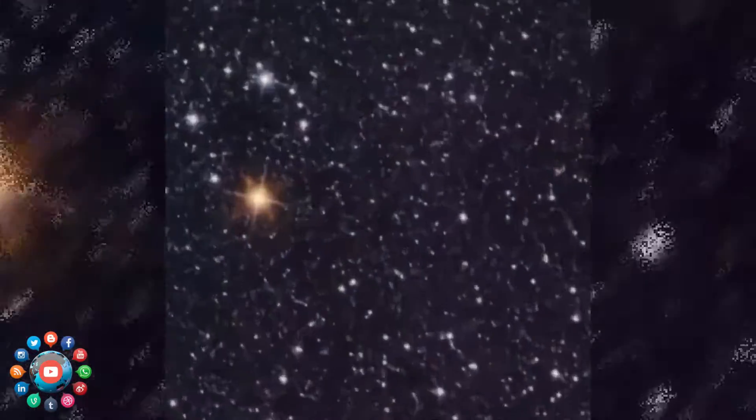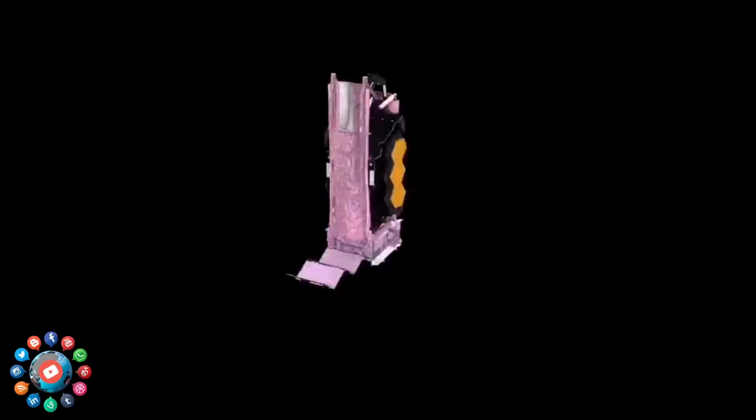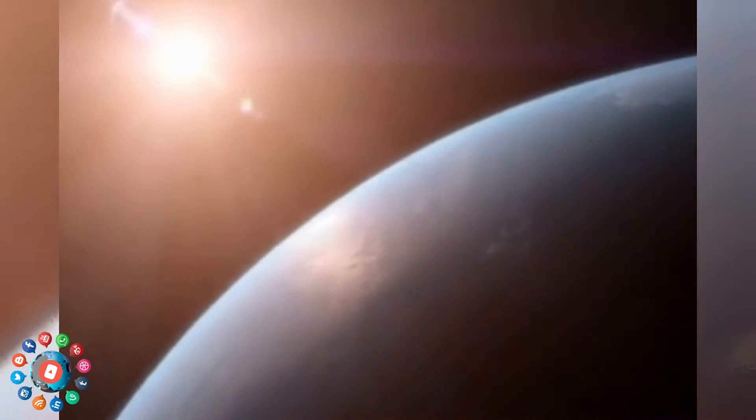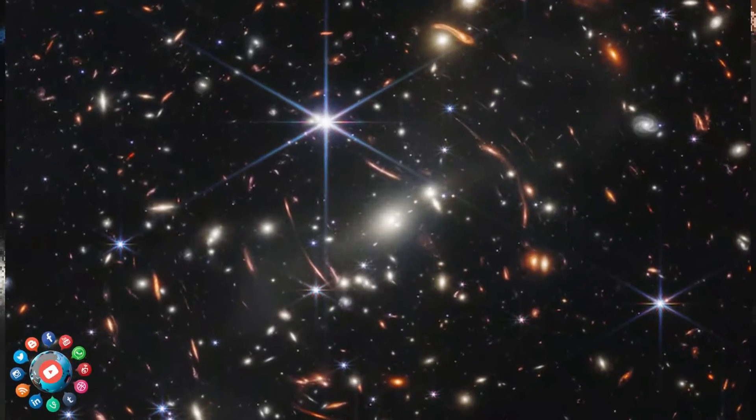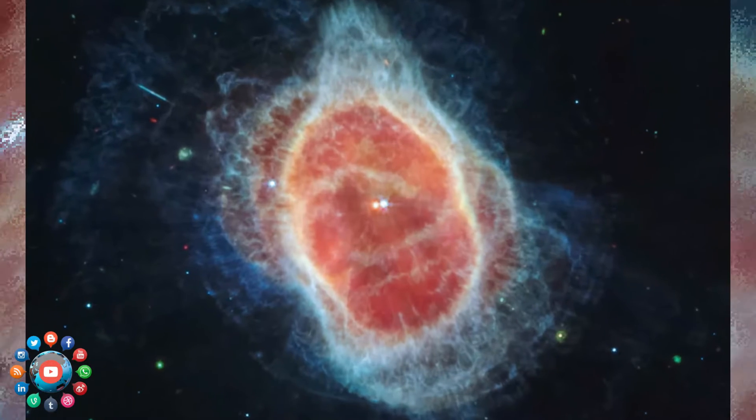Webb was launched from French Guiana on an Ariane 5 rocket in December 2021 and is orbiting the Sun at a distance of 1.7 million kilometers from Earth in a region of space known as the second Lagrange point. Here it remains in a fixed position relative to the Earth and Sun with minimal fuel required for course corrections.